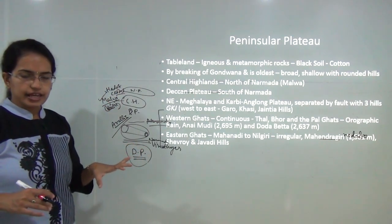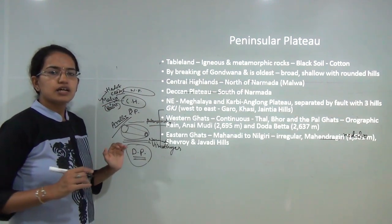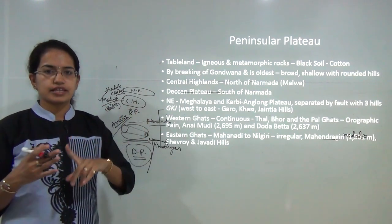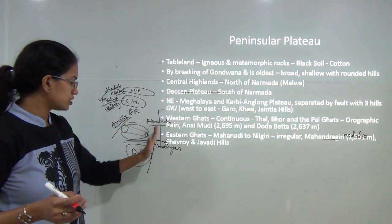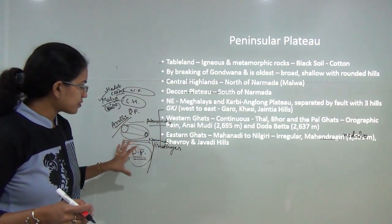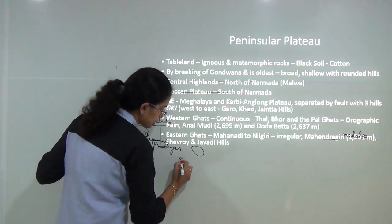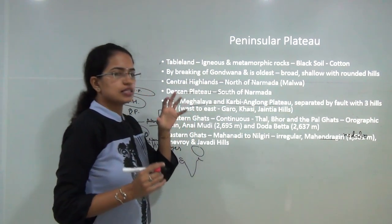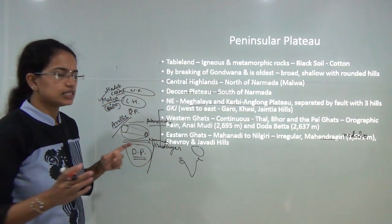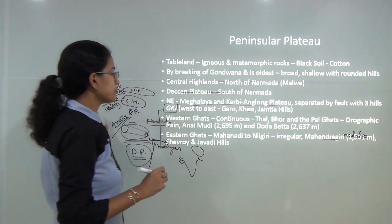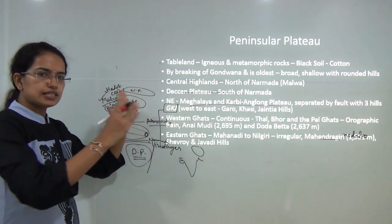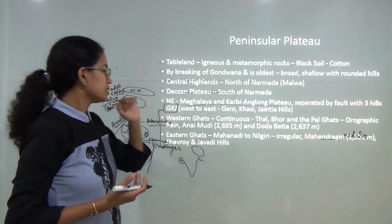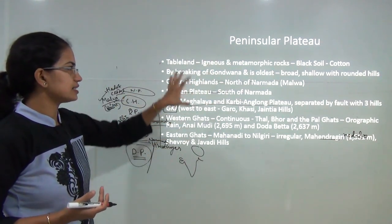The Deccan plateau has northern edges meeting with the Satpura ranges, and towards the eastern side you have the Mahadev, Kaimur range, and Maikal range. The plateau also has an extension visible in northeast India — mainly the Meghalaya and Karbi Anglong plateau, separated by a fault zone. A useful mnemonic is GKJ: Garo hills, Khasi hills, and Jaintia hills, moving from west to east. These form the northeastern extension of the peninsular region.